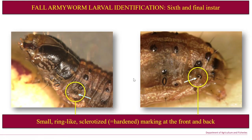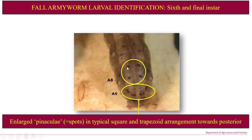If you've got access to a microscope or a really good hand lens, you can look towards the very front of the body where you'll see small, ring-like structures called sclerotides — a hardened part of the body — which are quite diagnostic. Something quite pronounced is on the tail end of the caterpillar: these are pinoculae, or spots, enlarged on abdominal segment eight in a square arrangement, and on abdominal segment nine in a trapezoidal arrangement. They're a little bigger than the other dots on the body, though bear in mind many other caterpillars also have dots.